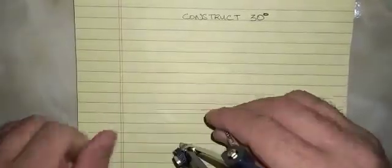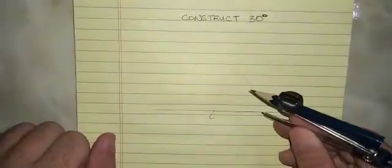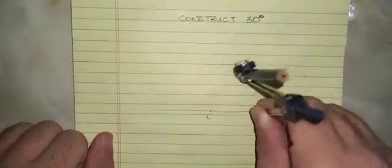Alright, having drawn the arc, where the arc intersects the line, we put our compass point there, and we cut the line.